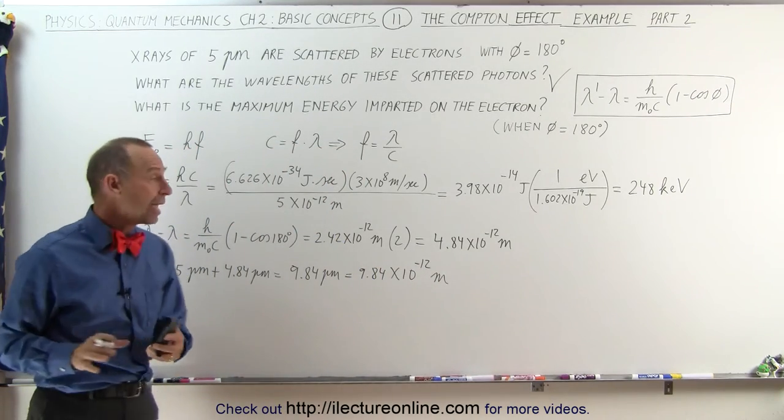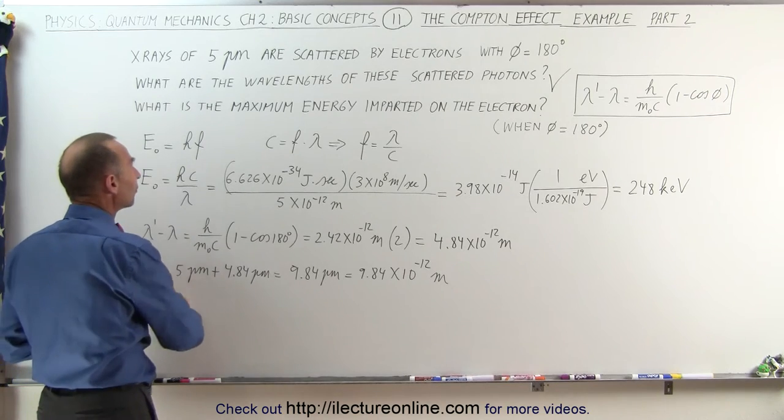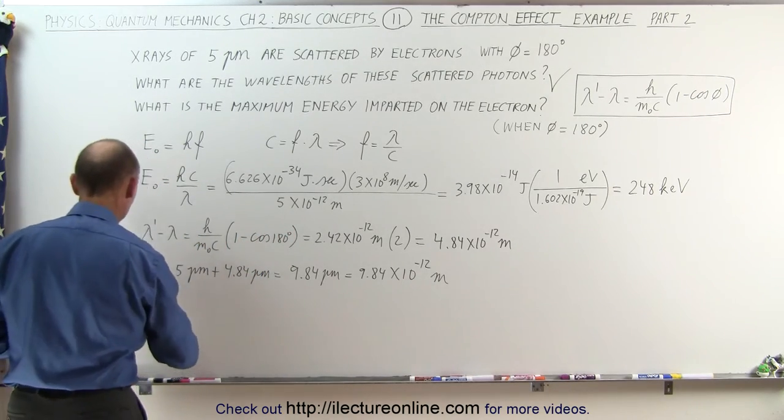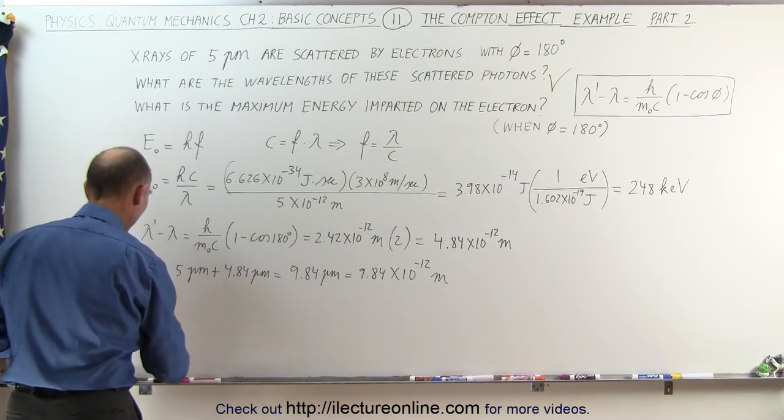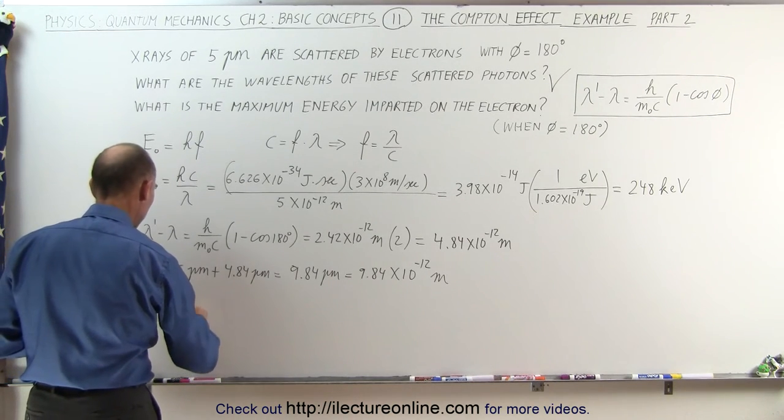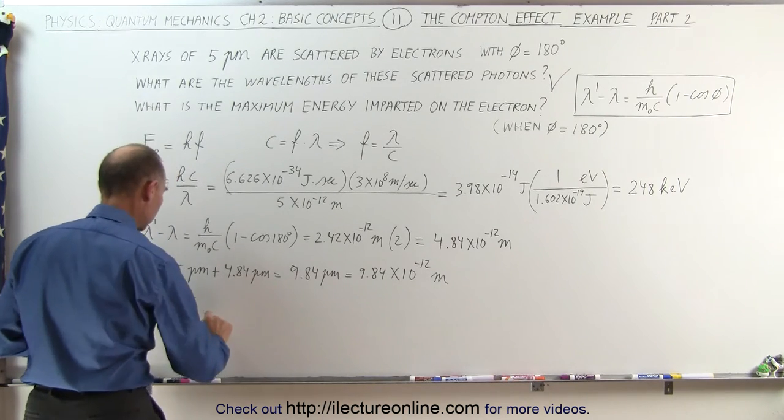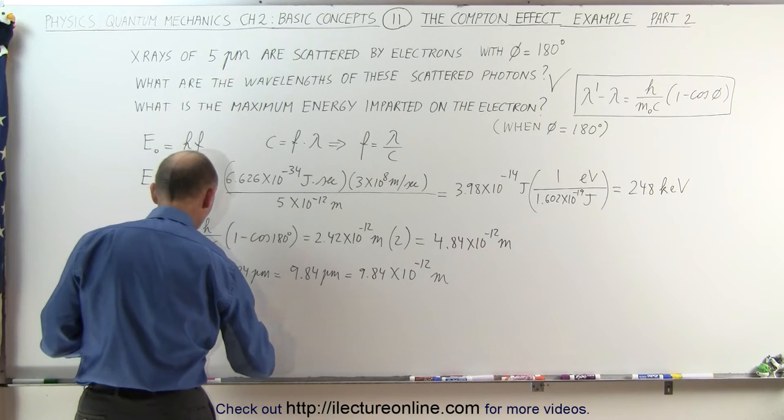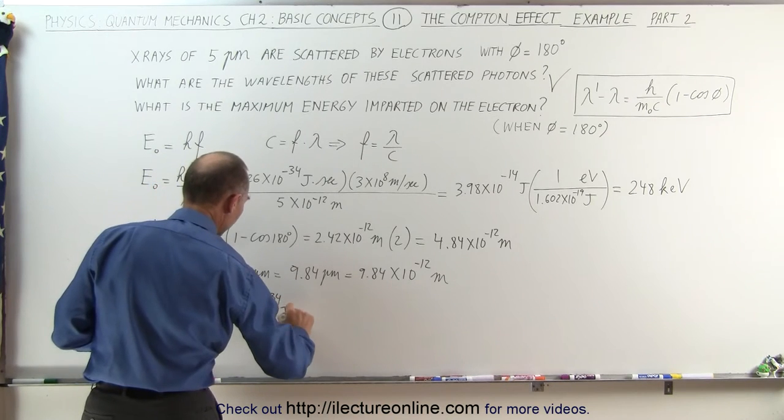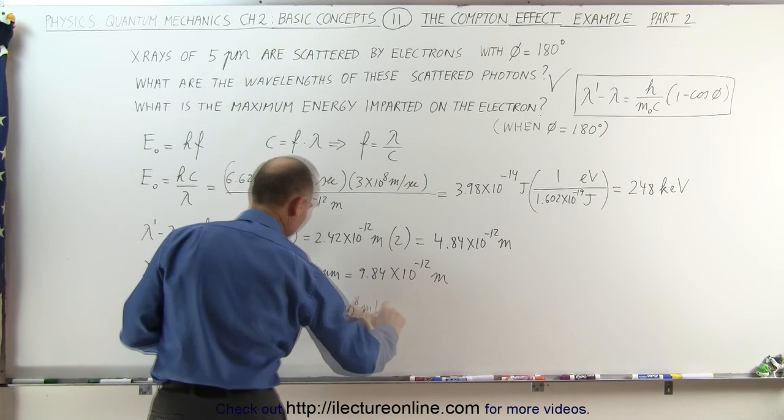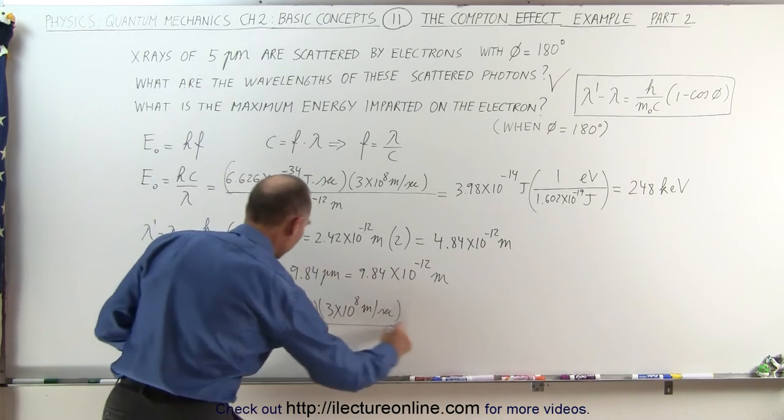All right, now that we have the wavelength of the scattered photons, let's go ahead and find the energy. So energy prime means after the scattering; that is going to be equal to hc over lambda prime, which is equal to 6.626 times 10 to the minus 34 joule-seconds times the speed of light, divided by the new wavelength of the scattered photons, 9.84 times 10 to the minus 12 meters.